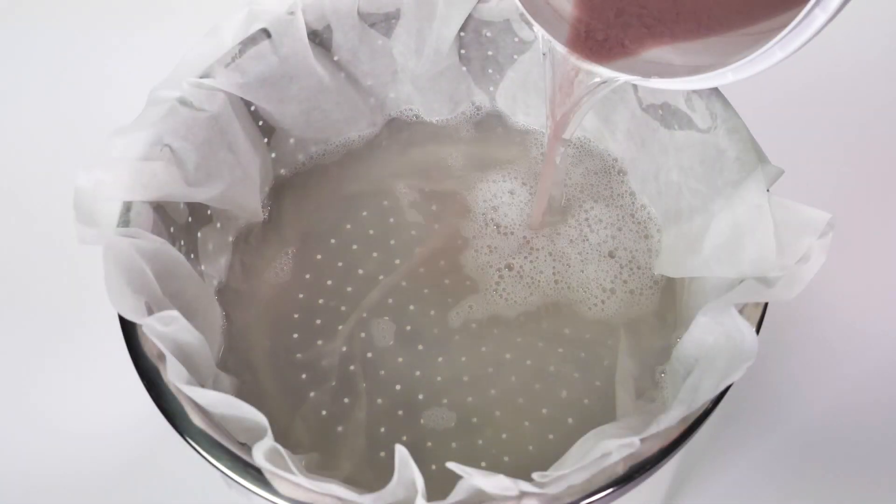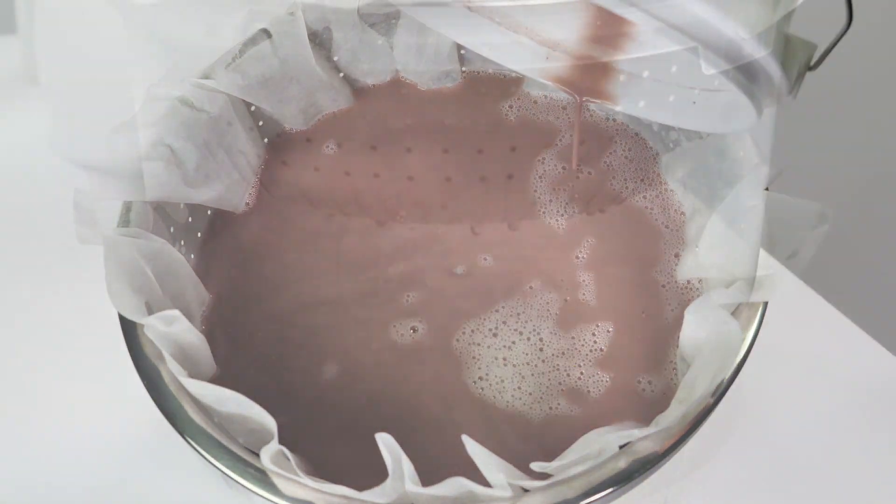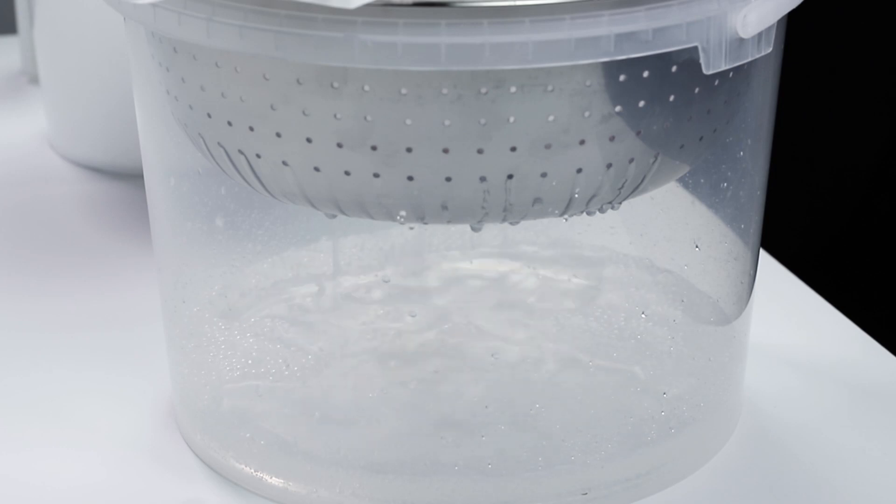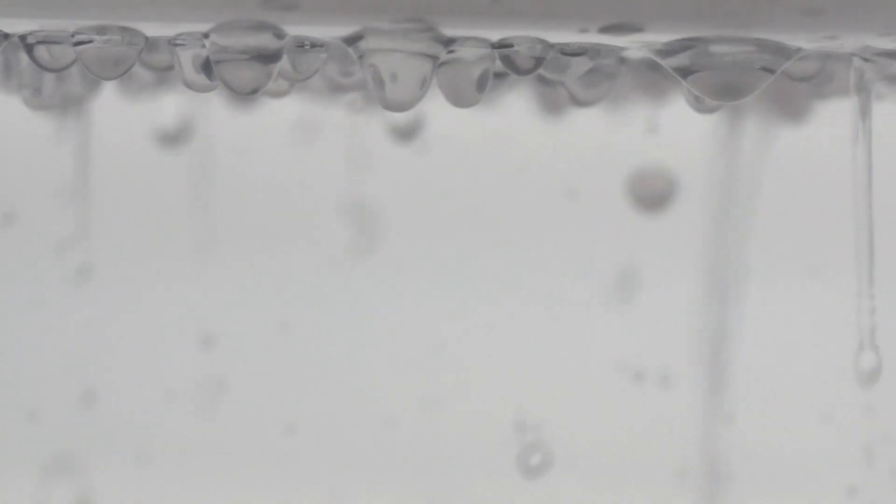Carefully pour the entire bucket of your treated wastewater into the paper filter. As the paint solids fill the bottom of the filter, it will take longer for the clean water to pass into the bucket.